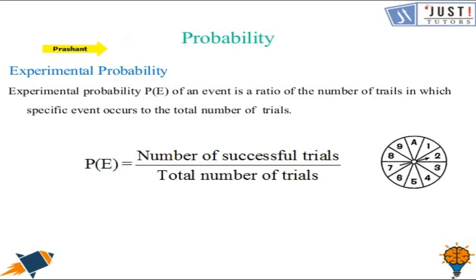You can see experimental probability - experimental probability PE of an event is the ratio of the number of trials in which specific event occurs to the total number of trials.